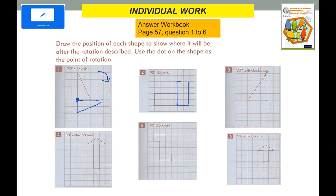Now 90 degrees anti-clockwise, so it will go this way. Counting the units — one, two, three — and how many on this side: one, two, three, four. Just add the line and then connect.